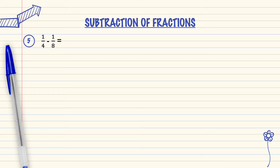Question number 5: 1 over 4 minus 1 over 8. As we can see, the denominator is different. So we must change the denominator to become the same number, then we subtract.